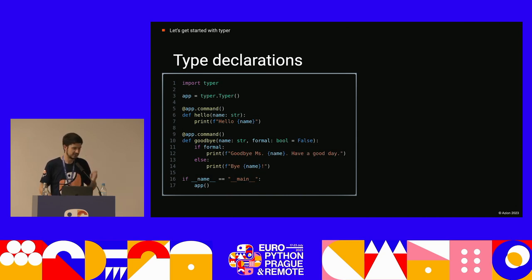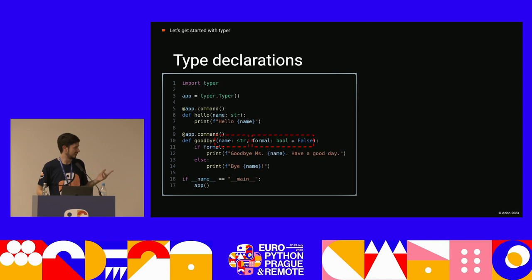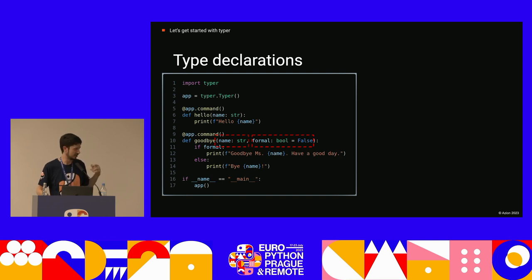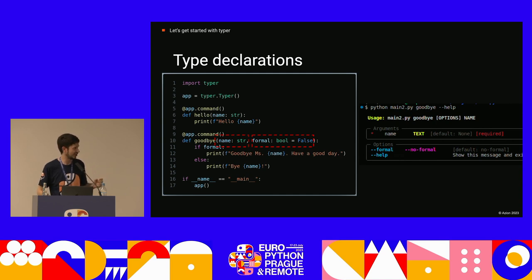I mentioned type declarations for Typer. In case you've never worked with them, here's what's going on: we have two parameters — name, which is a string, and formal, which is a boolean that can be true or false. The biggest difference is that the first one is an argument and is required, while the second one, since it already has a default value, is optional. If you don't pass it, there's no error — it just takes the default value and carries on.